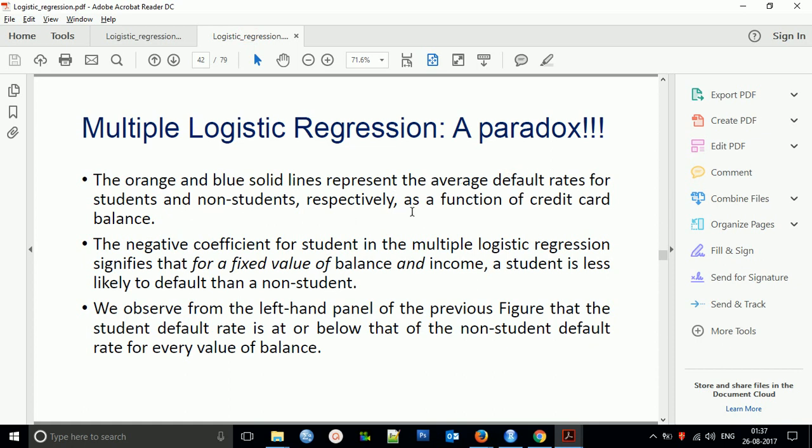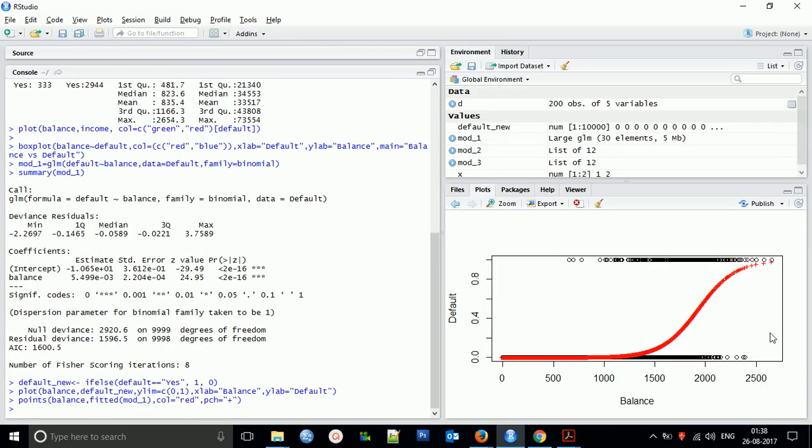The orange and blue solid lines represent the average default rates for students and non-students. This is the clear function of credit card business. The negative coefficient of student in the multiple logistic regression shows that at a fixed value of balance, the person who is a non-student has less chance to default compared to a student.